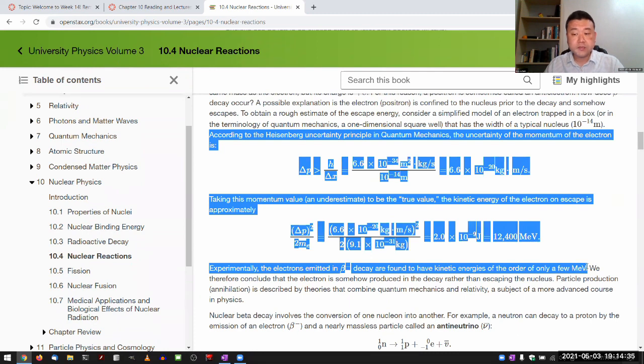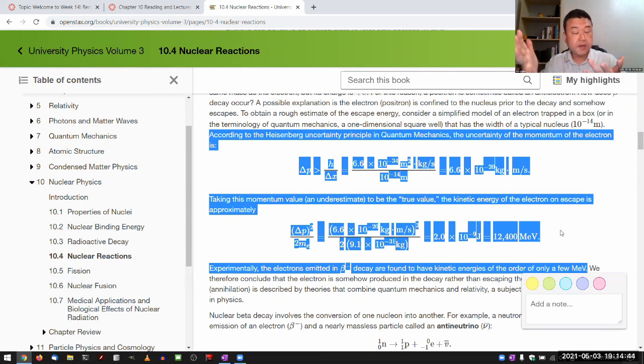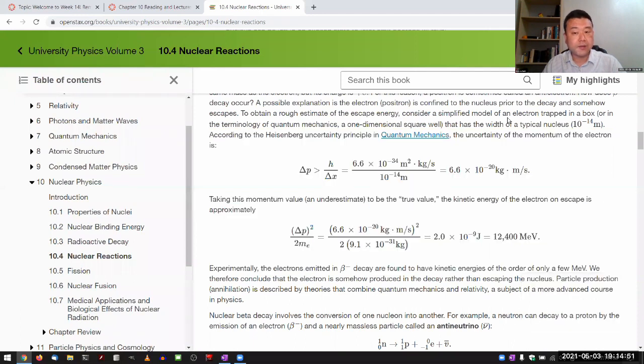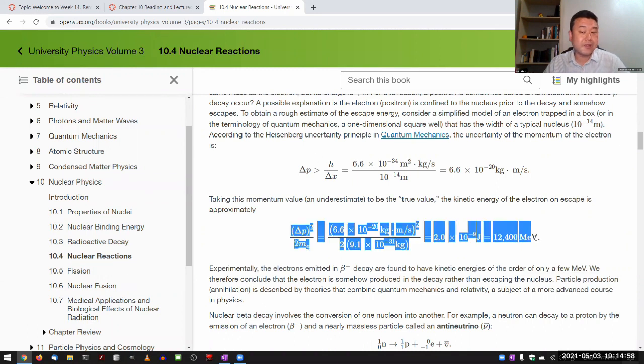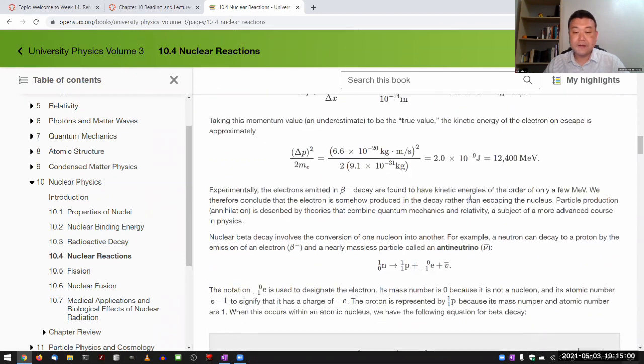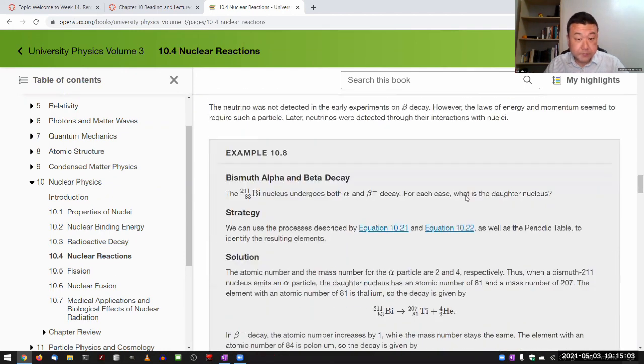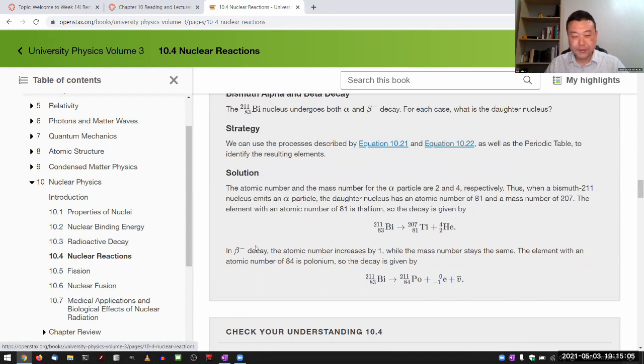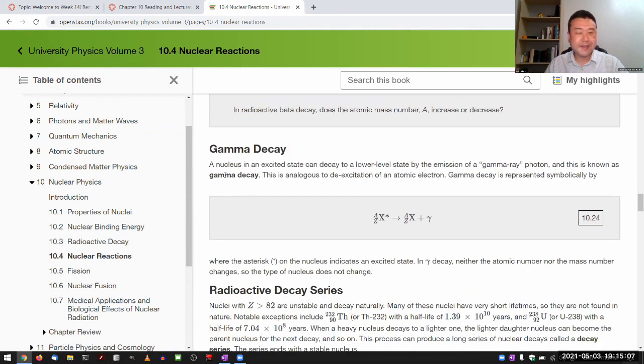This particular estimate that they're doing is useful to be aware of, because this is the best argument to say that the electron was not somehow confined within the nucleus. The electron is actually created in the decay of the neutron into a proton and electron. If you're trying to argue that the electron was confined, the uncertainty principle tells you that's not possible—these energies are way too high. Section 10.4 is where the lecture really gets started.